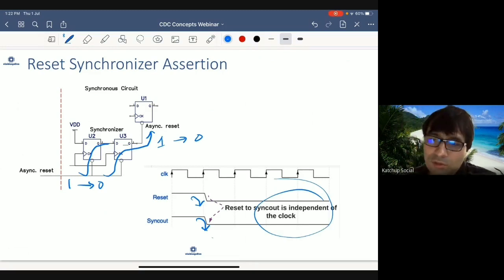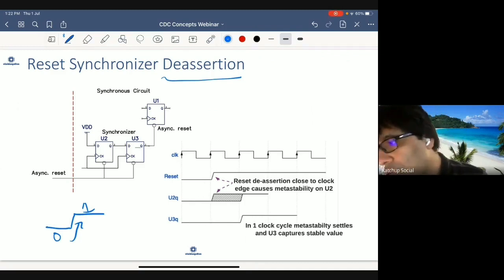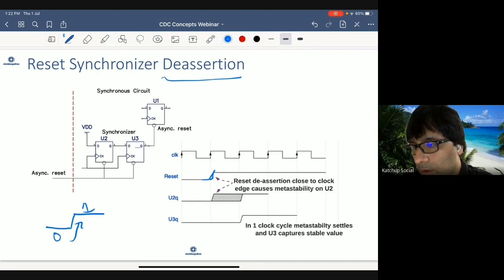Now let's talk about de-assertion, which means reset was asserted. Now it is de-asserted. So it changes from 0 to 1. So when reset changes from 0 to 1 here, this value will start taking over. And since it can happen close to clock edge, there will be metastability. It is possible that there can be metastability.